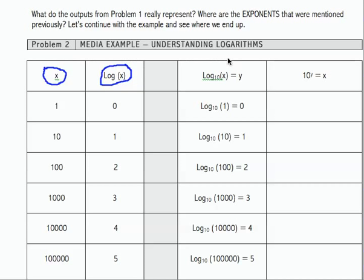The values are here in case you need to check your values from problem one. Now what you really didn't know at this point, because you're just learning about logarithms, is that what you were really doing was taking what's called the common logarithm of each of those values. And a common logarithm has what is called a base of 10.